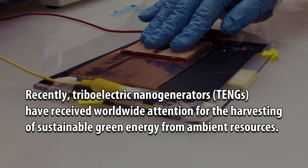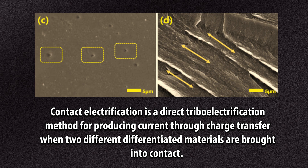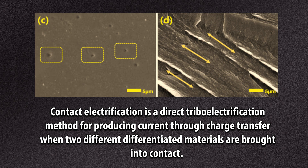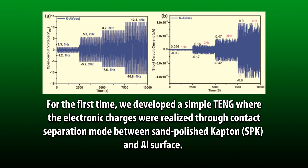Recently, triboelectric nanogenerators have received worldwide attention for the harvesting of sustainable green energy from ambient resources. Triboelectric nanogenerators are developed based on a combination of contact separation mode electrification and electrostatic induction to scavenge mechanical energy using triboelectric materials. Contact electrification is a direct triboelectrification method for producing current through charge transfer when two different materials are brought into contact.